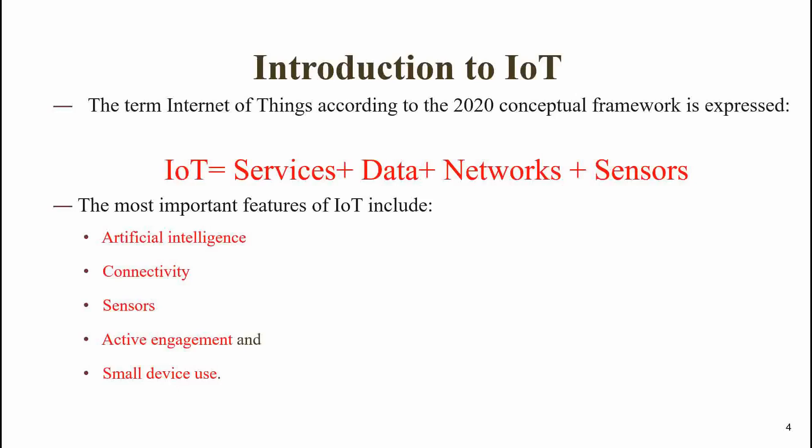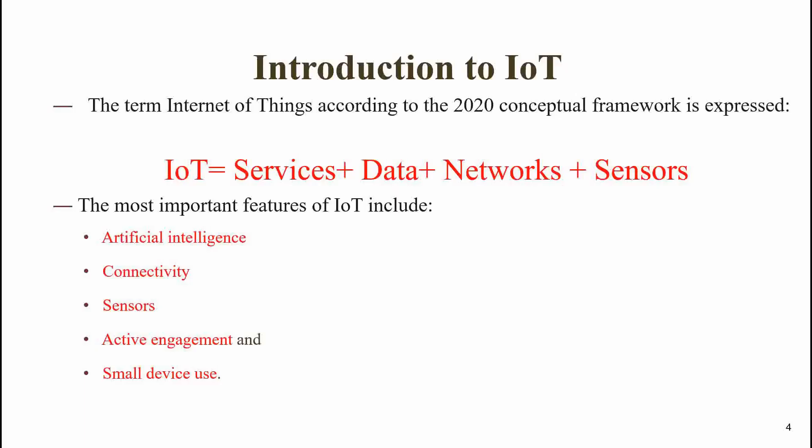So IoT equals services plus data plus network plus sensors, according to the 2021 conceptual framework model. The most important features of IoT: the first one is artificial intelligence. Without artificial intelligence, this IoT cannot work or be a functional model.